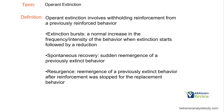A few terms to know for operant extinction. Extinction burst is that normal increase in the frequency or intensity of behavior when extinction starts, followed by a reduction. If we were to graph it, we implement extinction and we expect behavior to increase in frequency and intensity at first because the behavior is no longer receiving reinforcement. Then after a while, we can expect it to decrease. So we can plan for these extinction bursts.